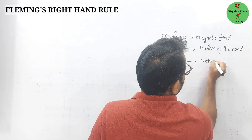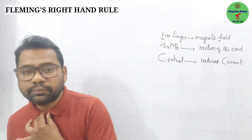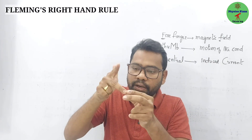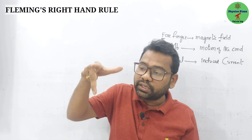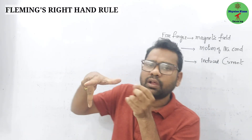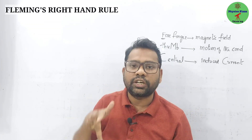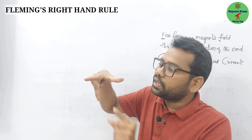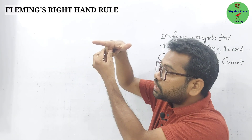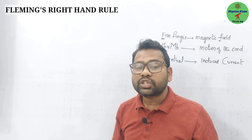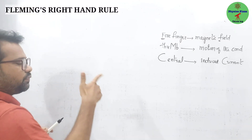According to Fleming's right-hand rule, stretch the thumb, forefinger, and central finger of your right hand such that they are mutually perpendicular to each other — one along the x-axis, one along the y-axis, one along the z-axis. If the four fingers indicate the direction of the magnetic field and the thumb indicates the direction of motion of the conductor, then the direction in which the central finger points gives the direction of the induced current.